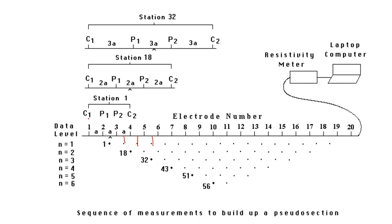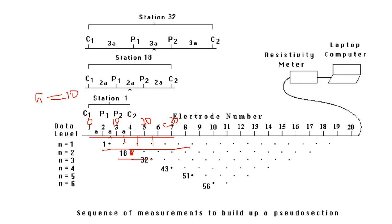For N equals 2, A equals 10. The first reading starts at 0, with electrodes at 0, 10, 20, and 30 meters, giving a midpoint of 15. The second reading starts from electrode 2, the third from electrode 3, and you continue until done. For N equals 2, you have a total of 14 readings.